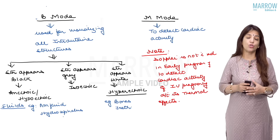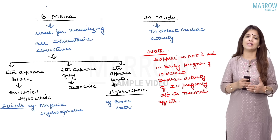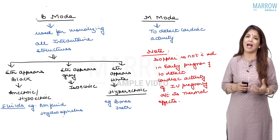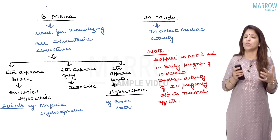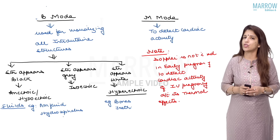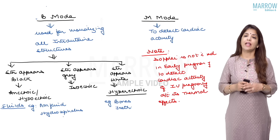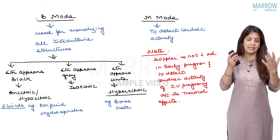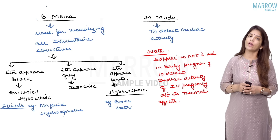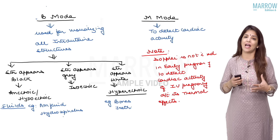Any structure which appears black on ultrasound means it is hypoechoic or anechoic, and every fluid appears black in color. In pregnancy, when you are looking at the intrauterine structures, it's the amniotic fluid which is going to appear black, or if there is a hydrocephalus, you are going to get a black fluid-filled cavity in the head. Structures which appear gray are isoechoic and structures which appear white are hyperechoic — for example, the bones and teeth.